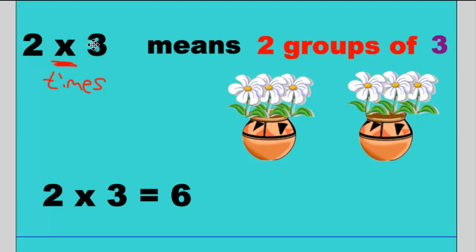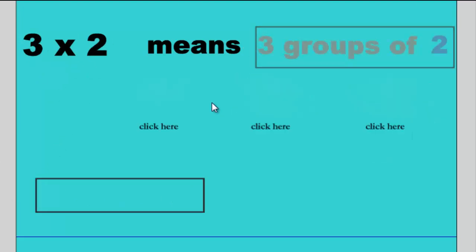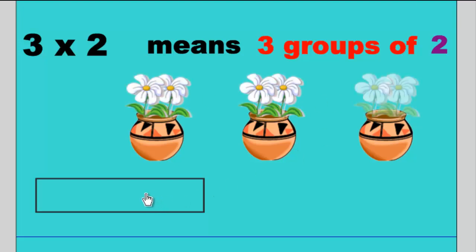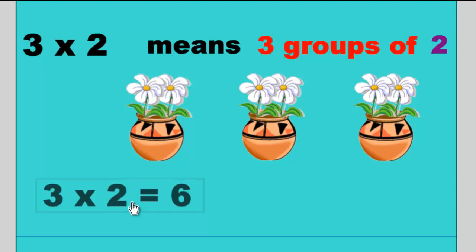Now what if we flip two and three? What if we put the three in the front and the two in the back? So it's three times two. Does that make any difference? It does. Three times two now means three groups of two. We need three groups. And then the two means we need to put two flowers in each one. Now count them. Two, four, six. Three times two is six. Wait a minute. It didn't change the answer. We still get the same answer, right? That's correct. We don't get a different answer, but the picture looks different. So the picture will change. The answer doesn't when you flip the numbers around.